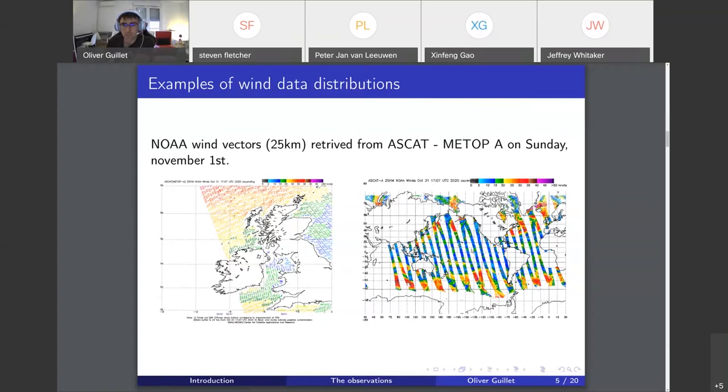Before answering this question, I would like to show briefly what these observations look like in practice and especially what their spatial distributions are. On the right you have the scatterometer NOAA wind vectors from the SCAT instrument on the whole planet, and on the left is a zoom over Ireland.